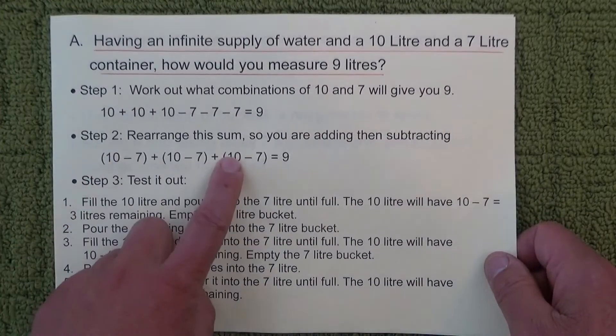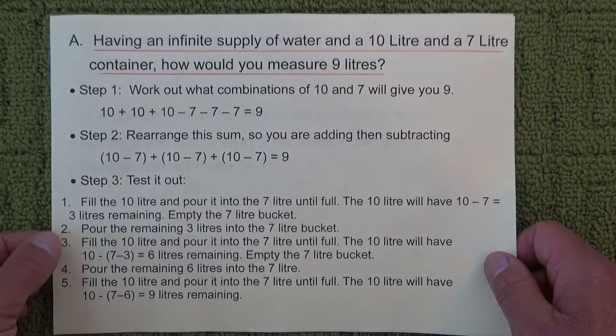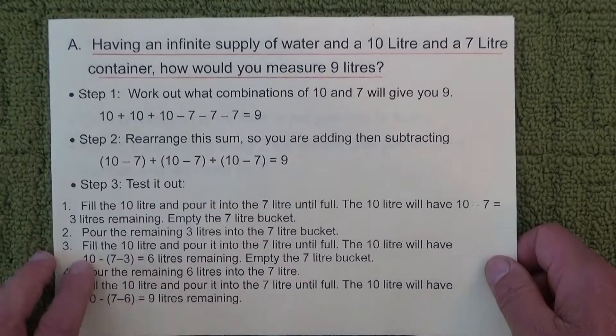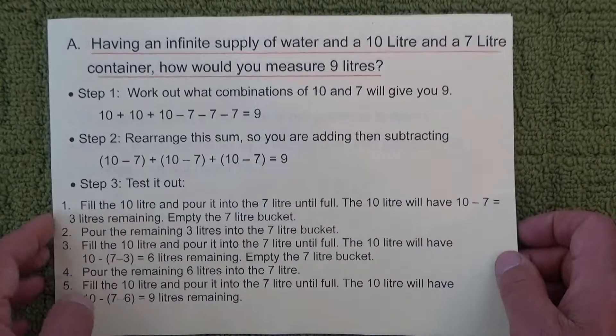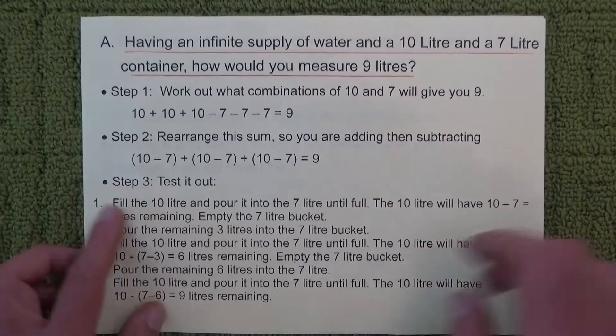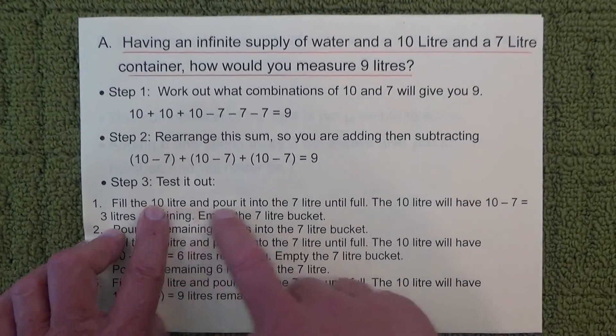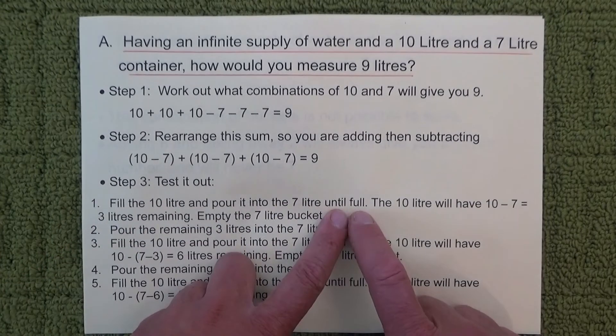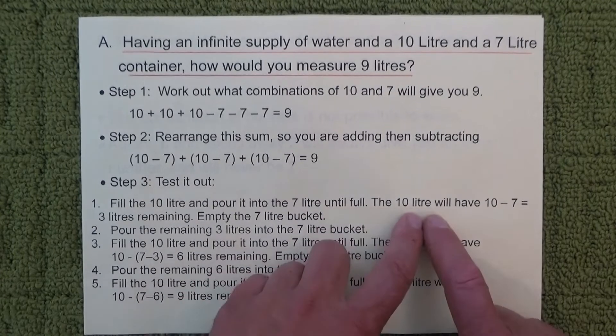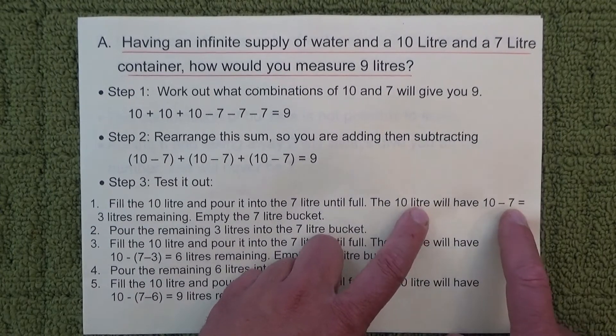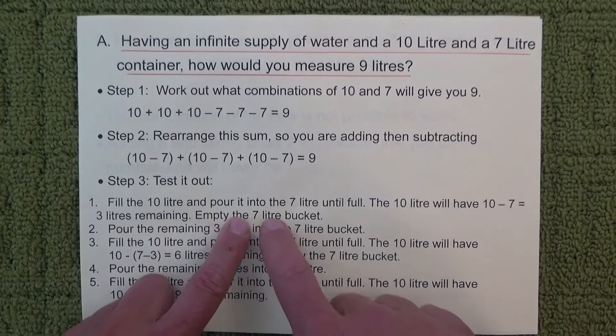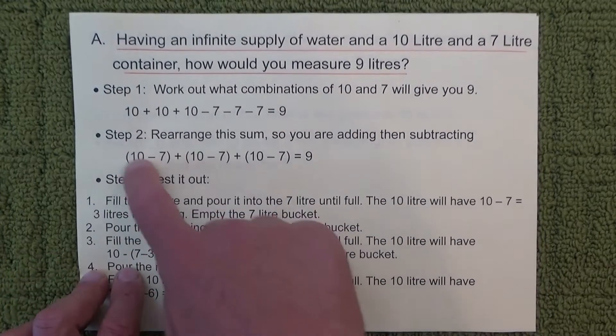So what we need to do now is actually test it out and see how that would work in practice with the containers. So you can see there that we fill the 10 litre and pour it into the 7 litre bucket until it's full. The 10 litre now will have 3 litres remaining, and then we empty out the 7 litre bucket. So that's like the first lot of 10 minus 7.